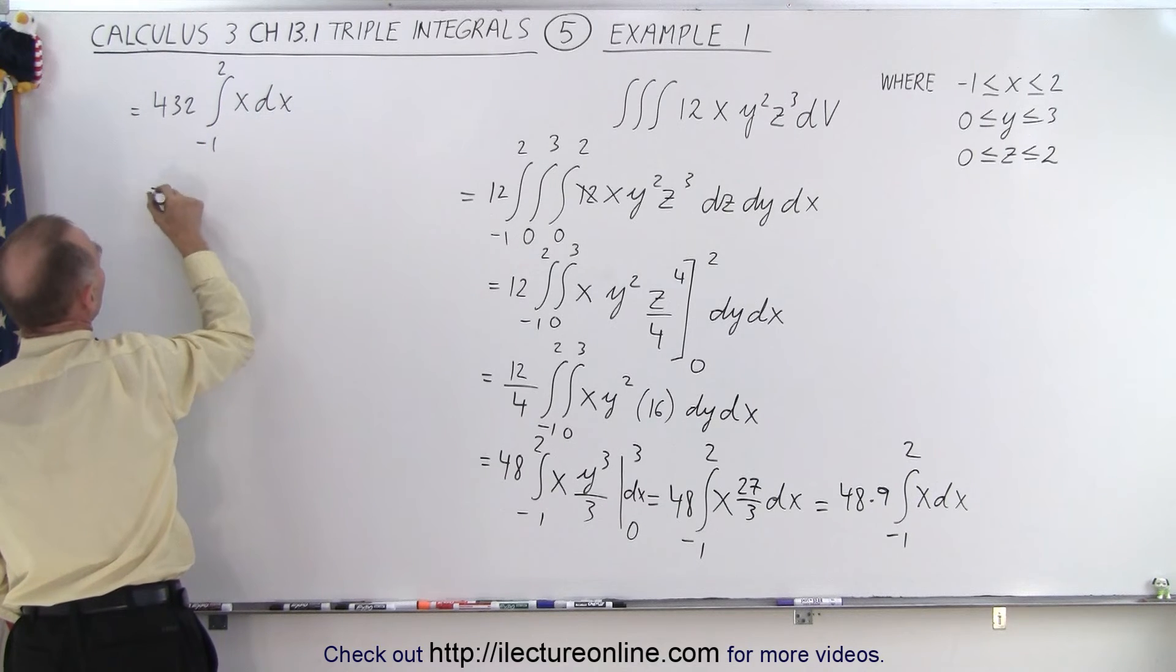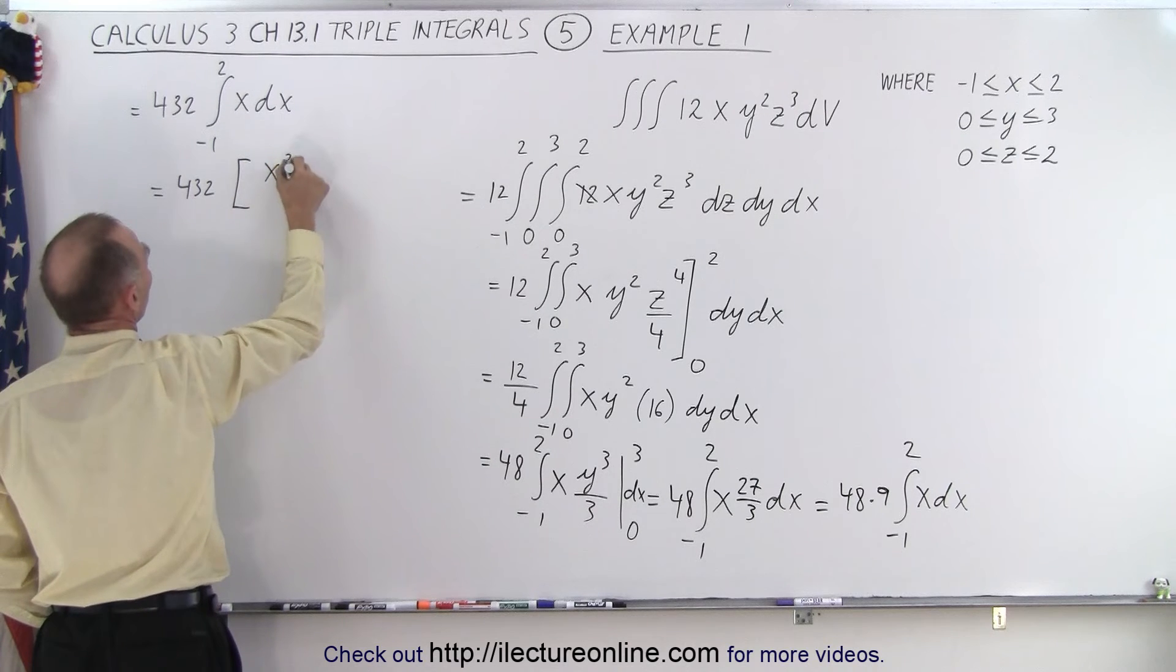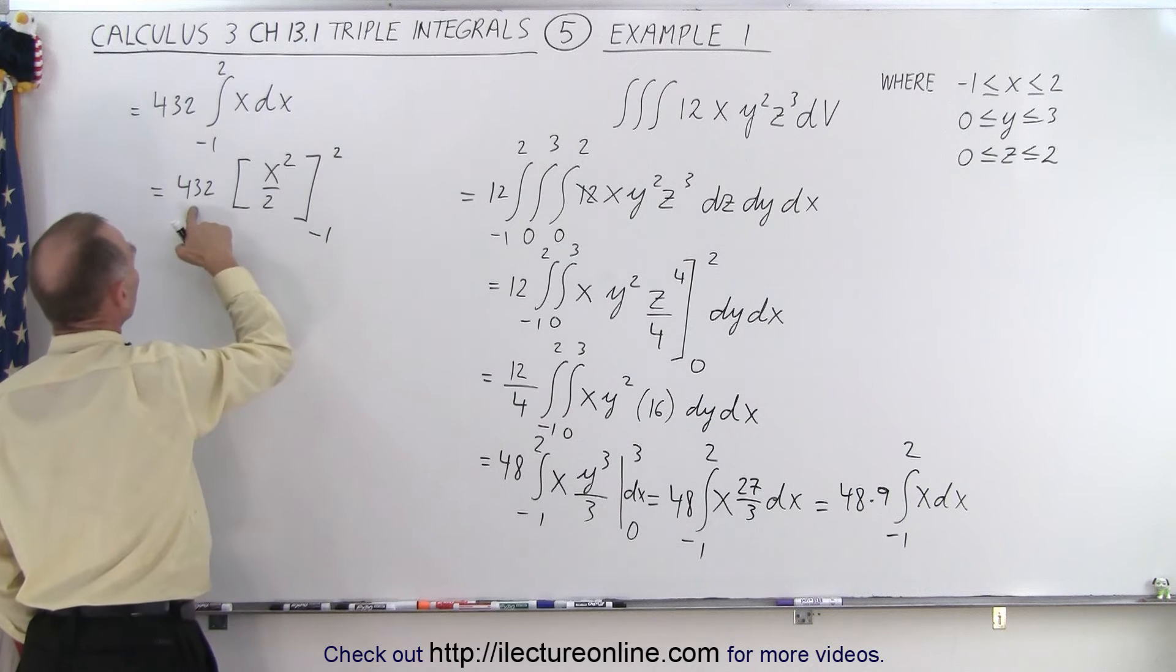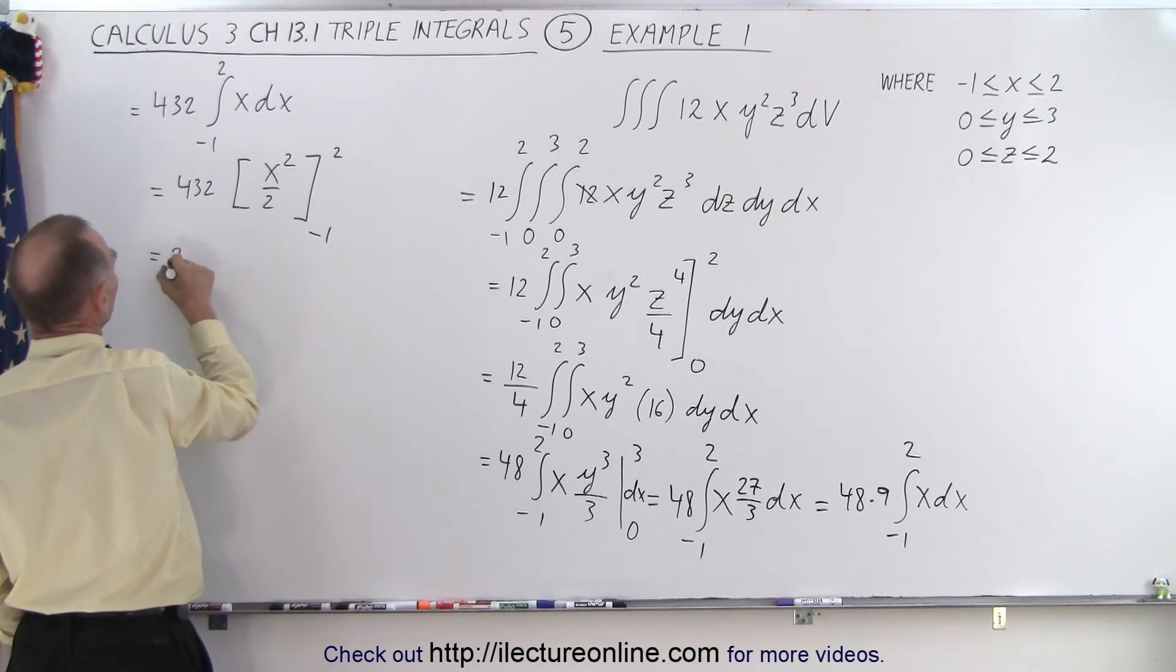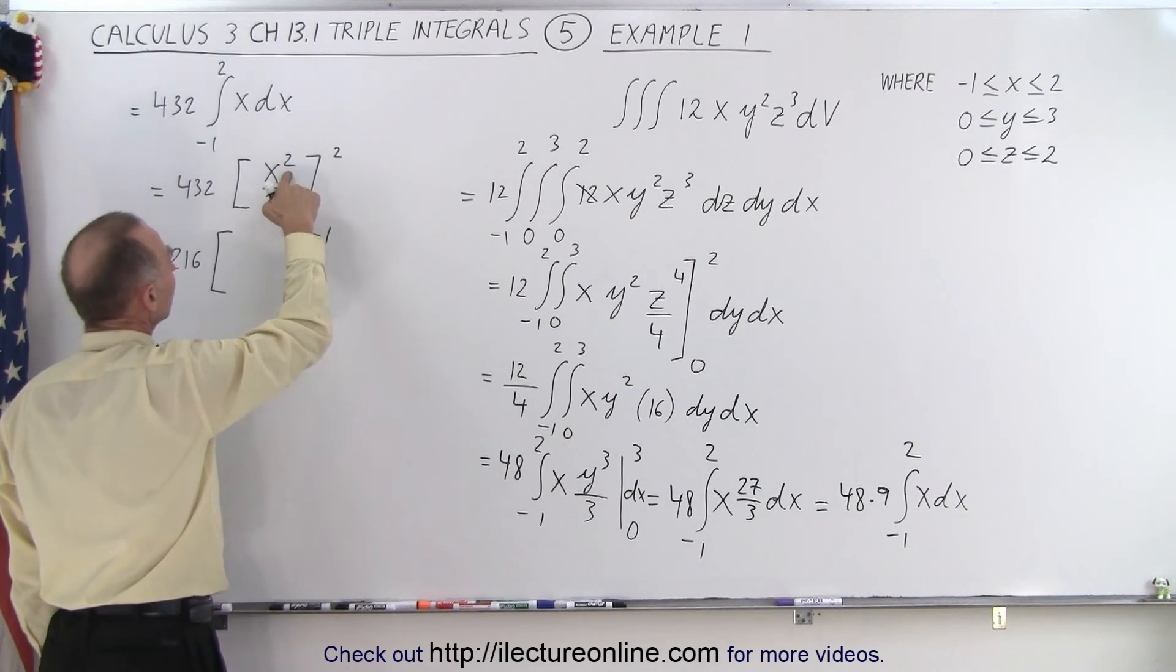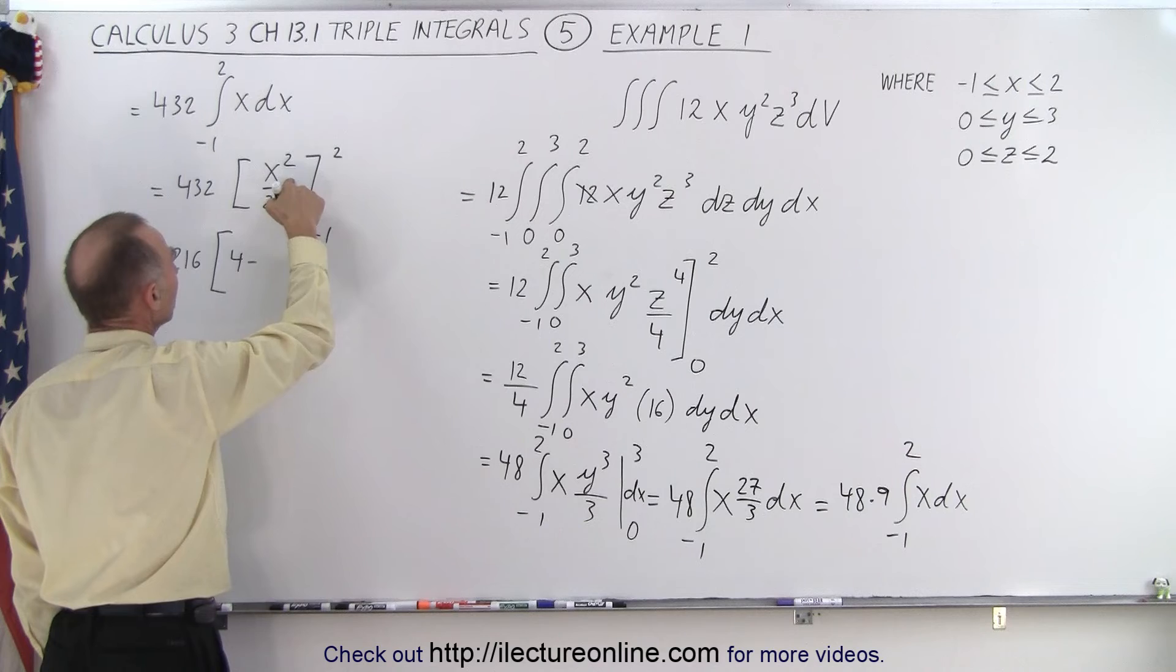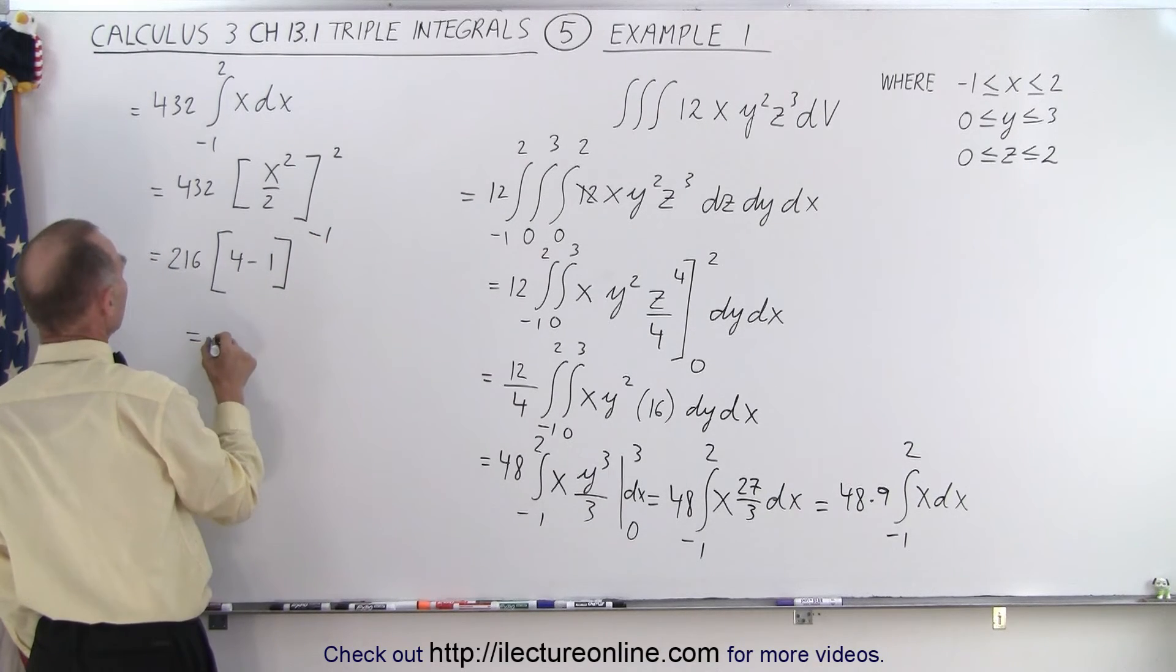Of course that's an easy integral. So this becomes 432 times x² over 2, evaluate from -1 to 2. Now 2 goes into 432, that would be 216. So this is equal to 216 times, when you plug in the upper limit because the 2 is gone now, we get x², that means 4 minus when we plug in the lower limit we get 1.